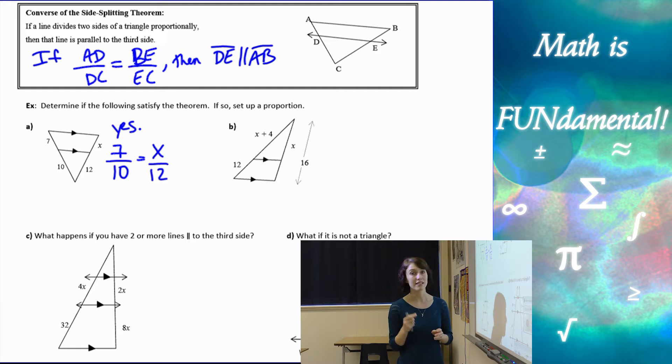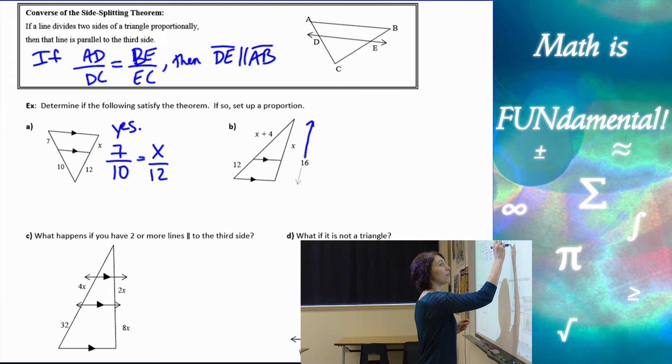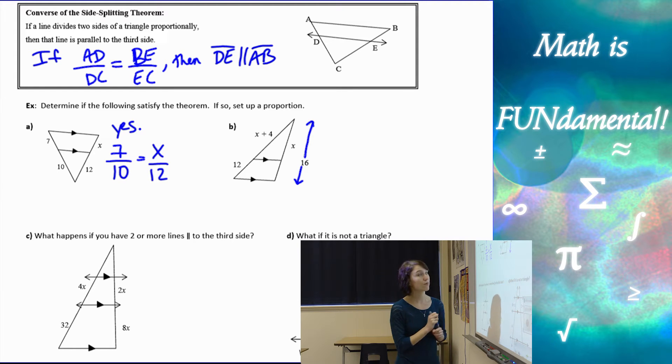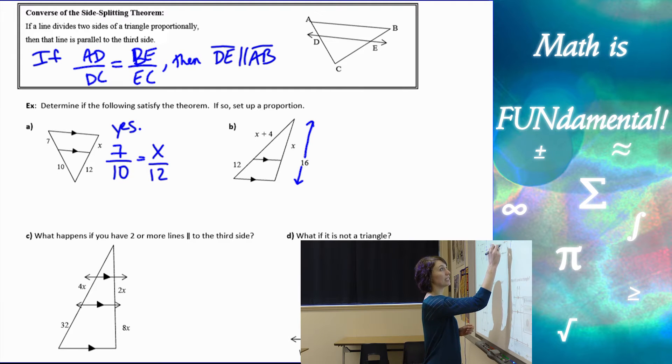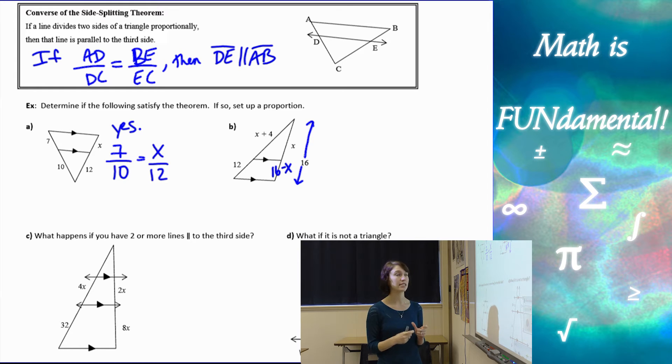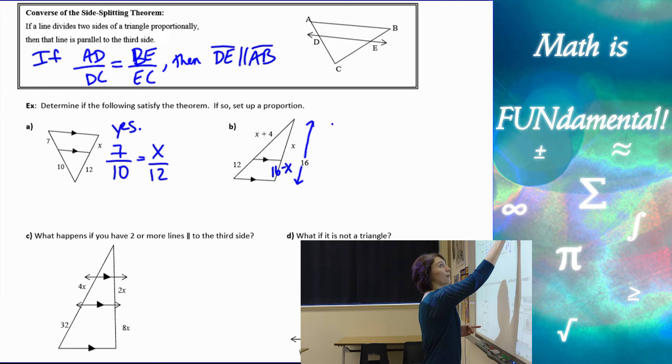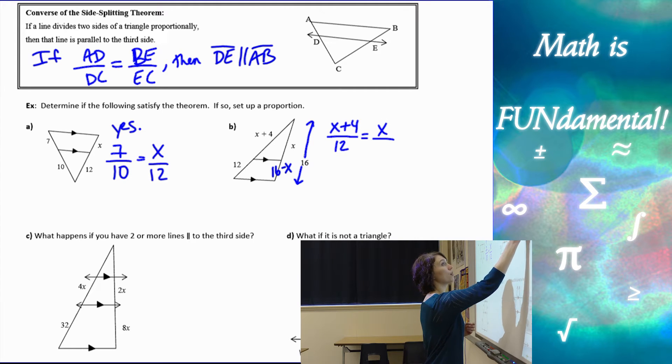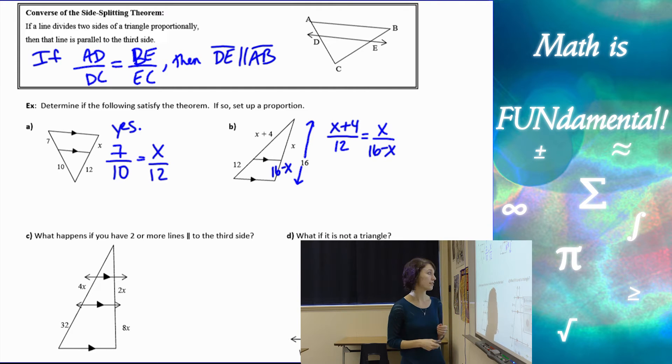Similarly with B, it's going to be a little different. If you notice, we're given the information that 16 is this whole thing here, which means I want to figure out what this piece is, which would be 16 minus X. So we do want to find those pieces that are missing. So now I can set up my proportion because I have parallel sides. X plus 4 over 12 equals X over 16 minus X for that little piece. And then cross multiply and divide.